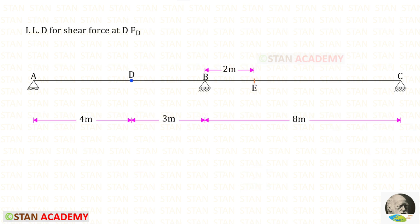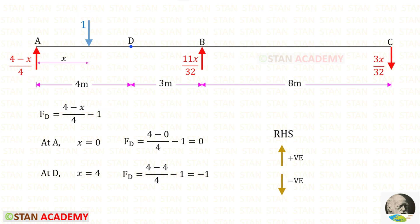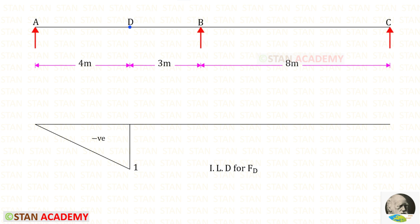We are going to draw the ILD for the shear force at D. First, let us keep the unit load between A and D. To find the shear at point D, we can use the right-hand side rule. RA is acting upwards, so it will be positive. The unit load is acting downwards, so it will be negative. At point A, X will be 0, so FD will be 0. At D, X will be 4, so FD will be minus 1. When the unit load is in DBC, FD will be 0. This is the ILD for FD.